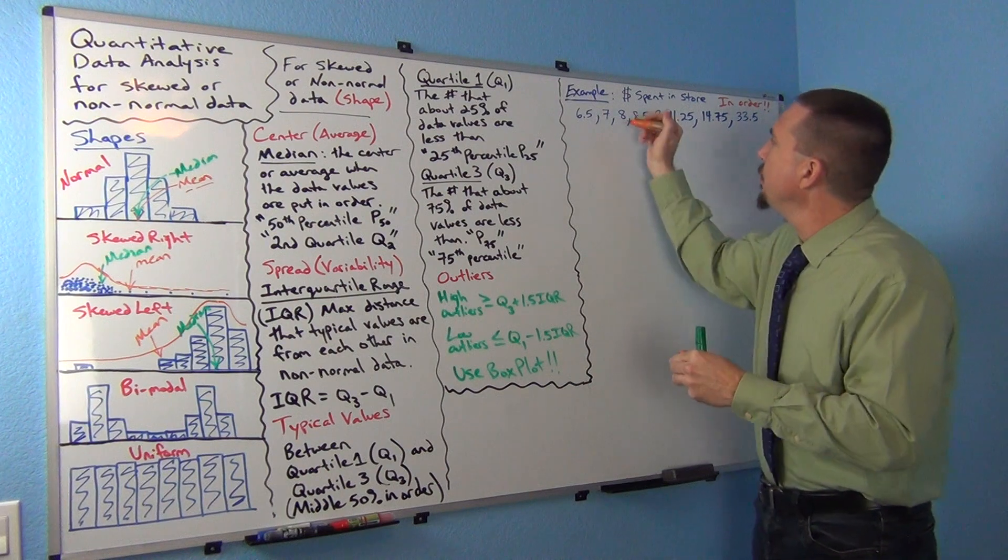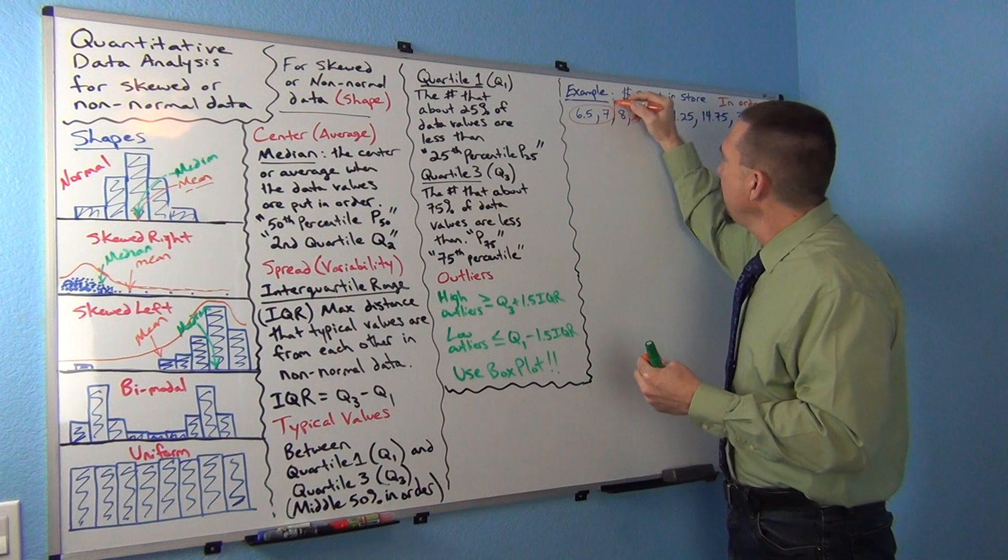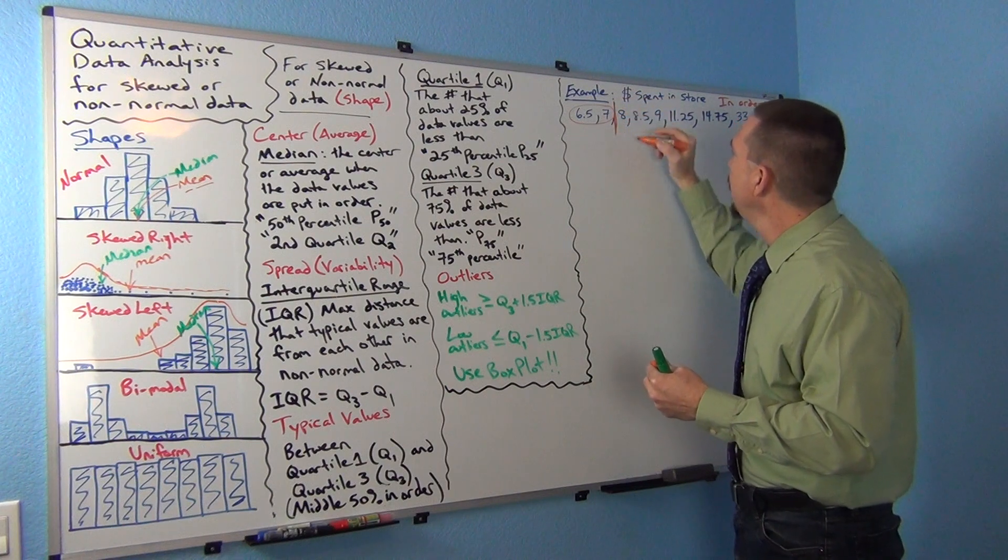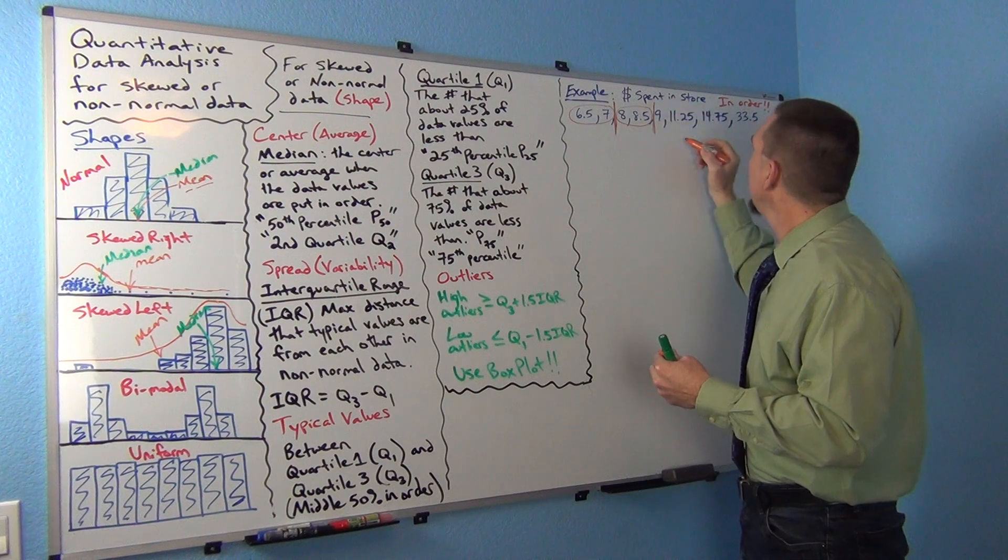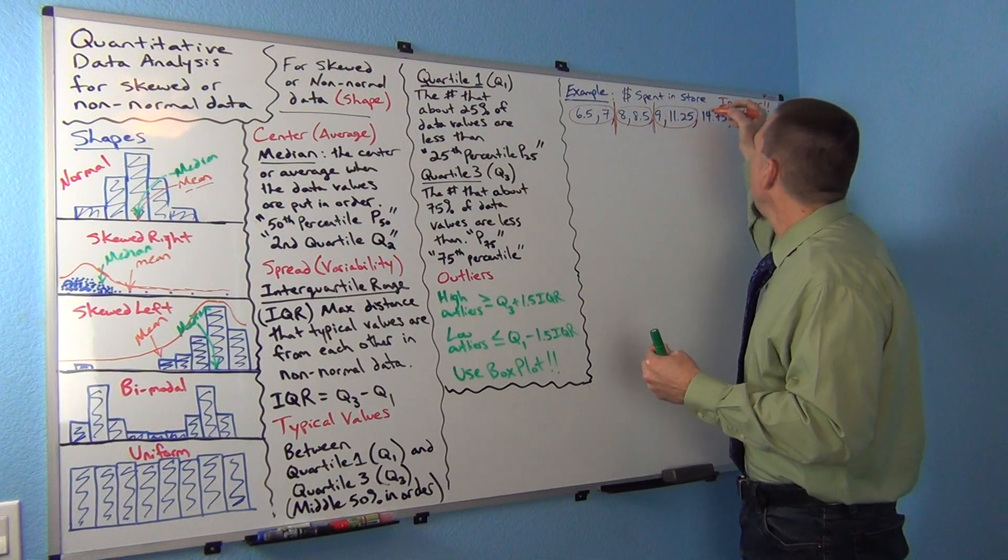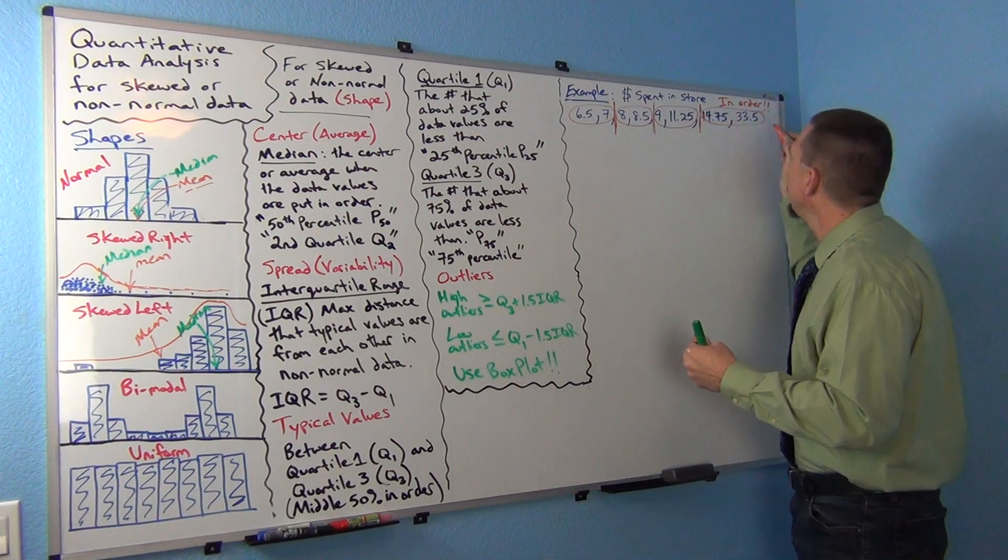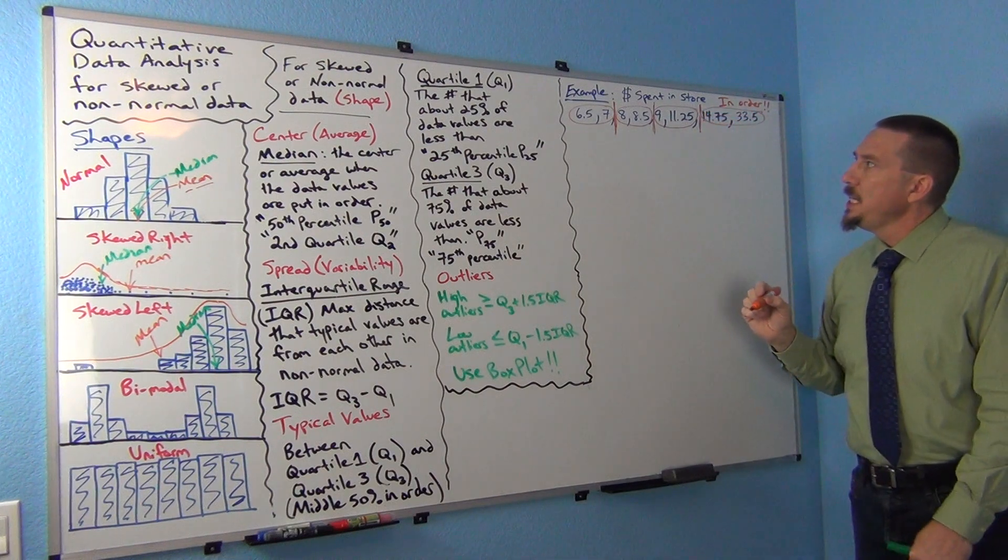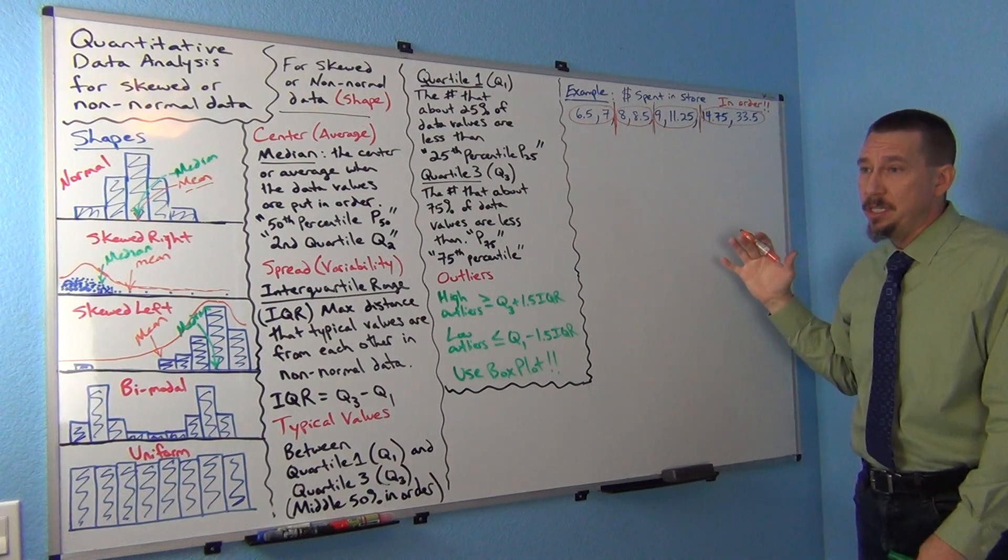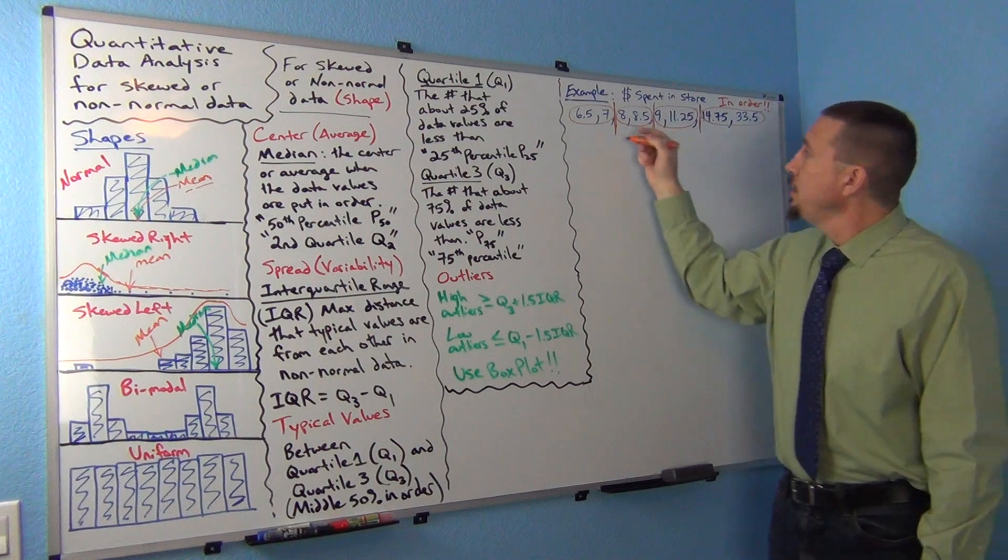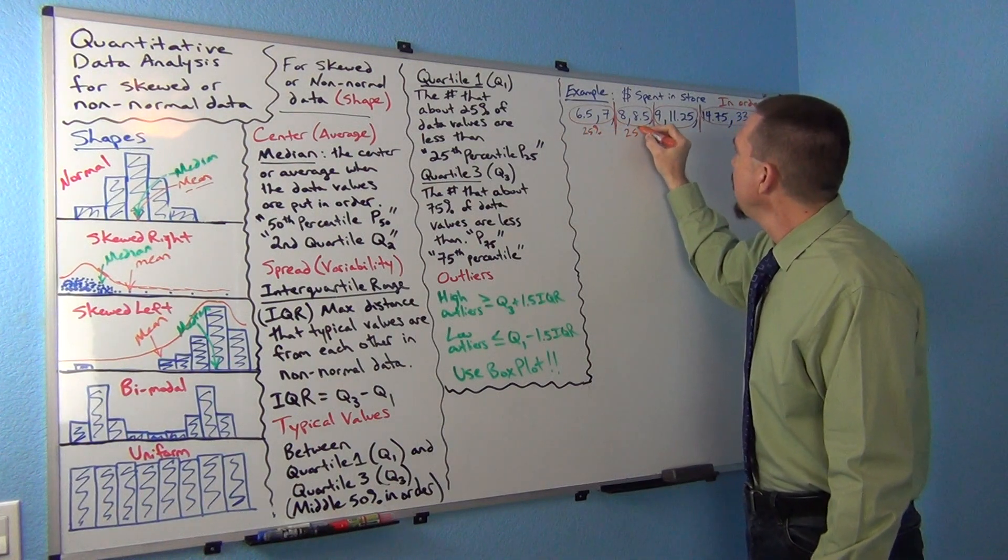Think of it this way: these first two numbers are the bottom group, the bottom 25%. They're going to have a divider here, then two numbers here, and a divider, and these two numbers here, and another divider. Then you'll have these two numbers. What the computer's doing, and this translates to if you had a thousand numbers, you'll see that you have about 25% of the numbers in each group.